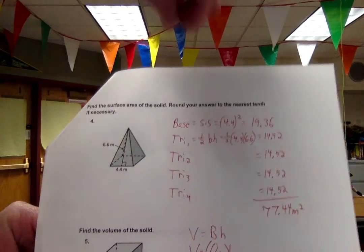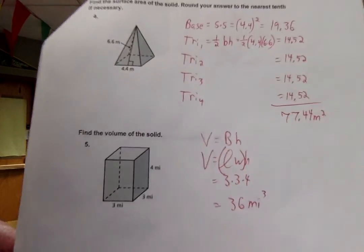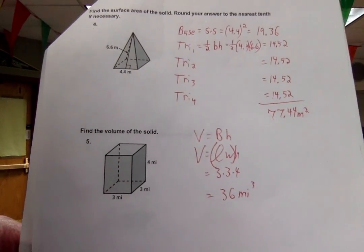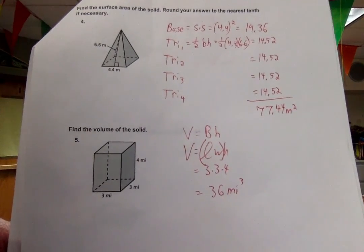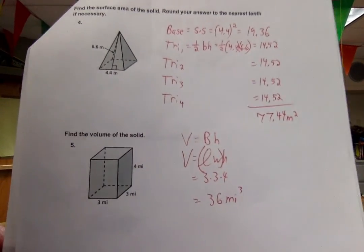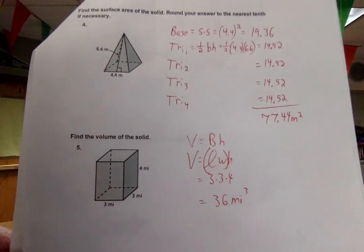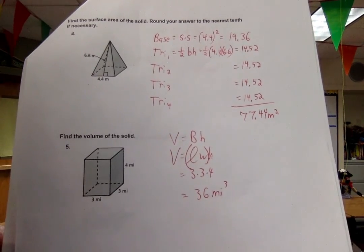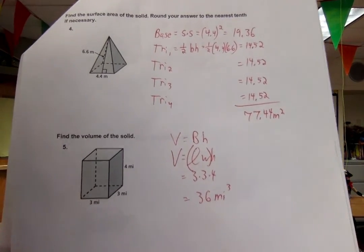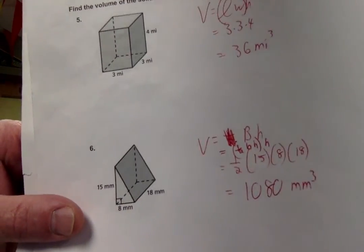Next up, number five. We have to find the volume of this solid. That looks like a rectangular prism. To find the volume, find the area of the base multiplied by the height. The area of the base, since it's a rectangle, is length times width. That's 3 times 3 times that 4, the height. That gives us a volume of 36 miles cubed.